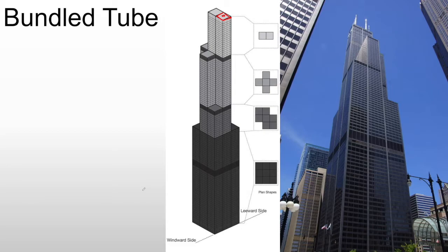It's said — anecdotally — that it looks like an old-fashioned soft pack of cigarettes that you dropped, and some of the cigarettes pulled out at different heights. The story goes that that's where the architect got the idea for these different levels that we see throughout the Sears Tower.